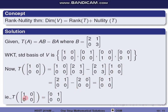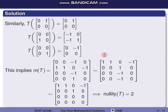We look at the images of the standard basis elements: T of [1,0;0,0], T of [0,1;0,0], T of [0,0;1,0], and T of [0,0;0,1] — these four standard basis matrices span the space of 2×2 matrices.